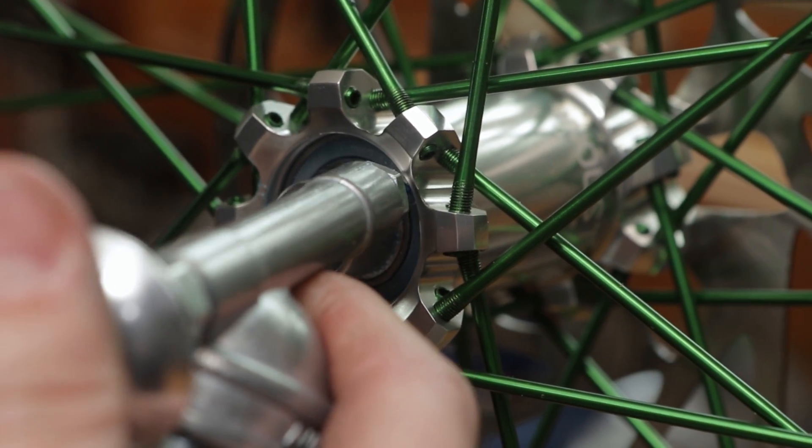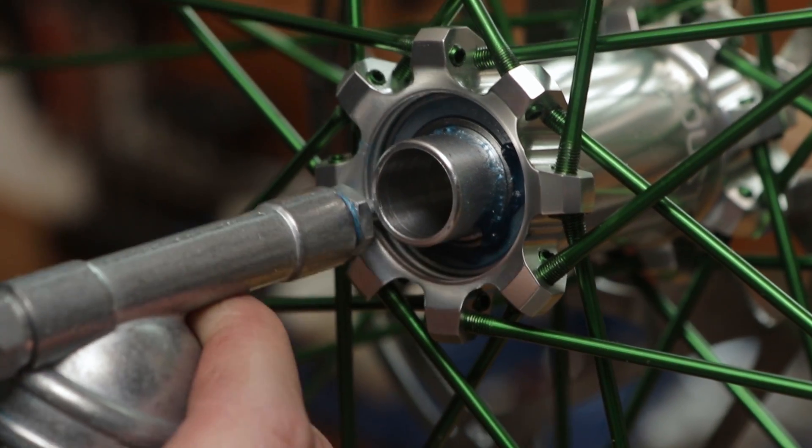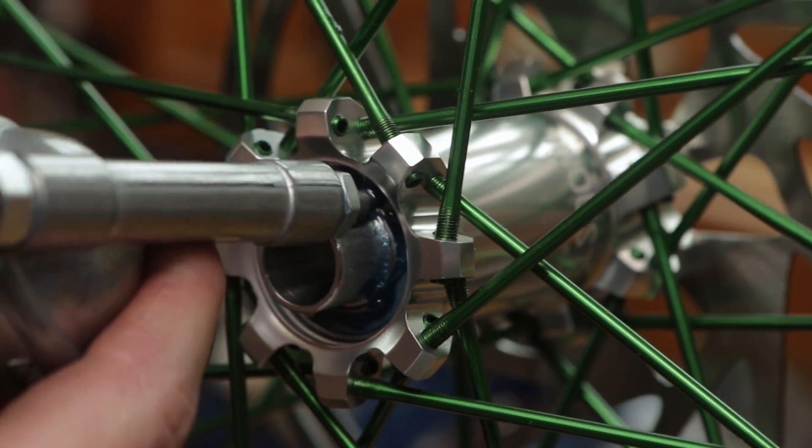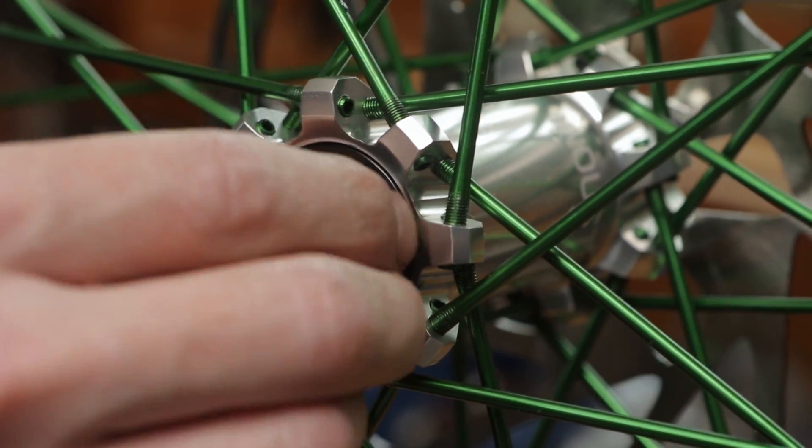A light coating of grease should be applied to the outboard face of both bearings. With the bearings greased, the end caps can be reinstalled.